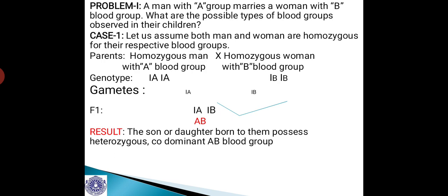We have to work it out for all possibilities, because a person having A or B blood group will have the possibility of homozygous or heterozygous condition. So let us consider four cases or four possibilities here.